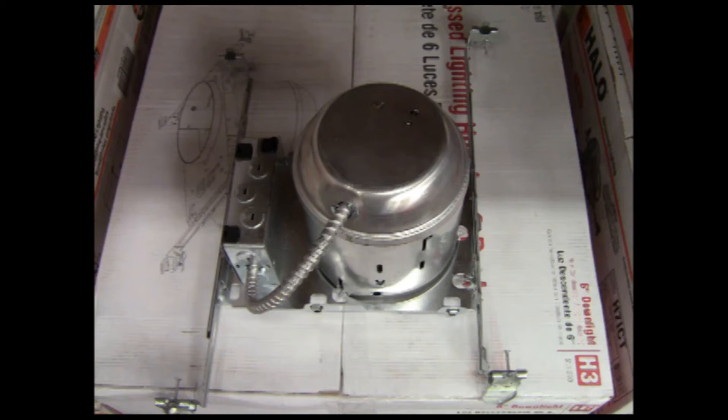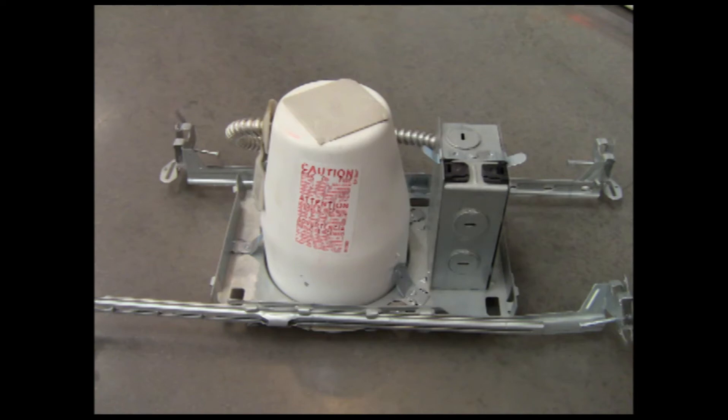This is a 6-inch recessed can used for new construction. They are mostly used in new homes, but because they are all metal, they can be used commercially as well. This is a 4-inch size and is commonly referred to as a mini can.